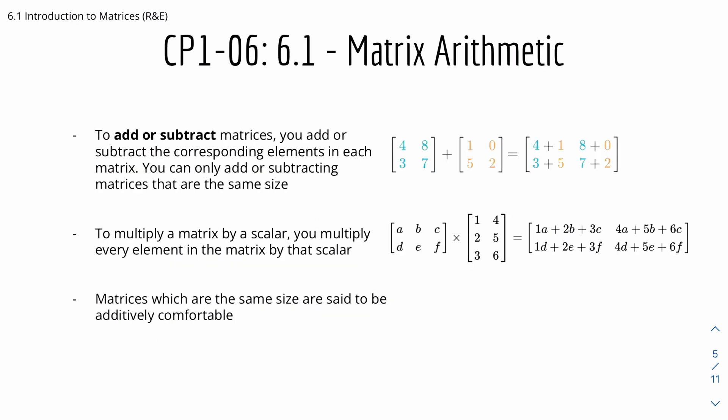And here we have matrix arithmetic. To add or subtract matrices you add or subtract the corresponding elements in each matrix, and you can only add or subtract matrices that are the same size. So for example here we have a 2 by 2 matrix. We can add these two up or we can subtract these two because they have the same size. So to add them up we just add the corresponding element. So for the first row first column, the element is 4 and 1, so to add them just add them up so 4 plus 1 is 5, or if you were to subtract them, 4 minus 1 would be 3 in this case.